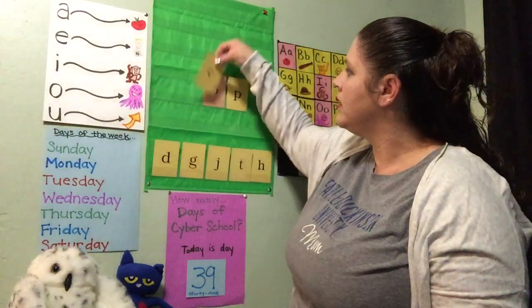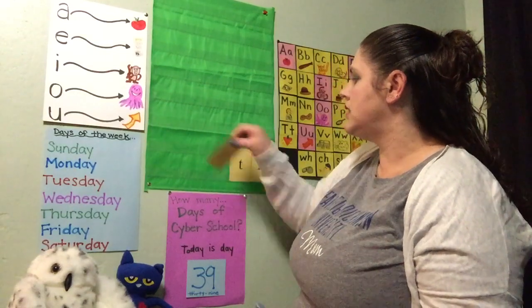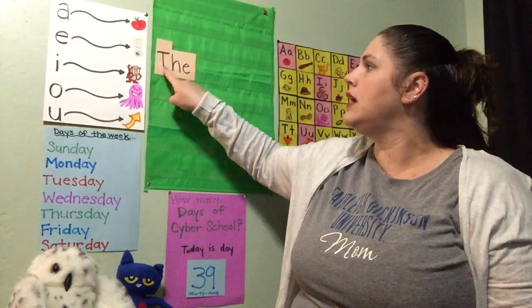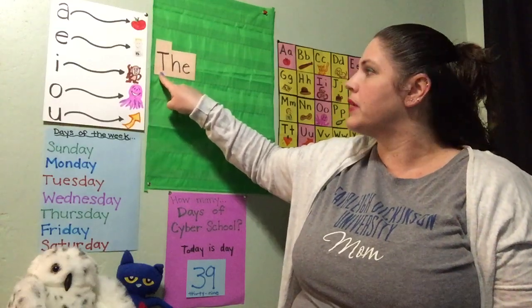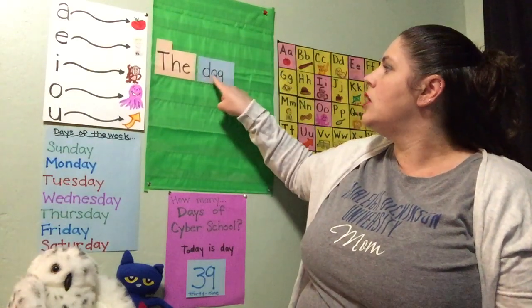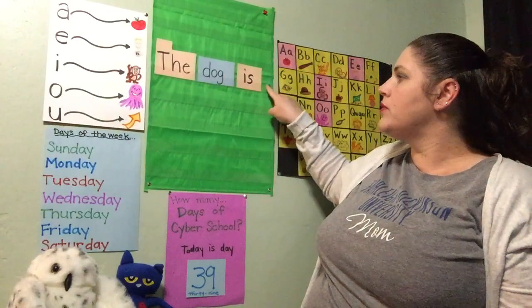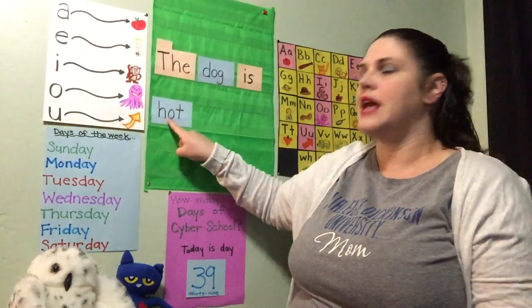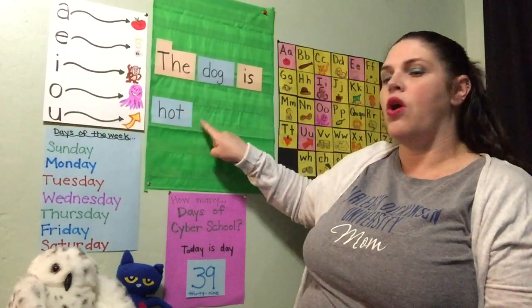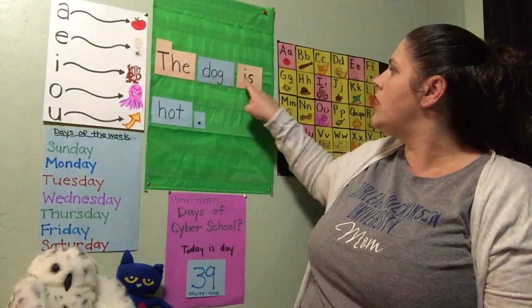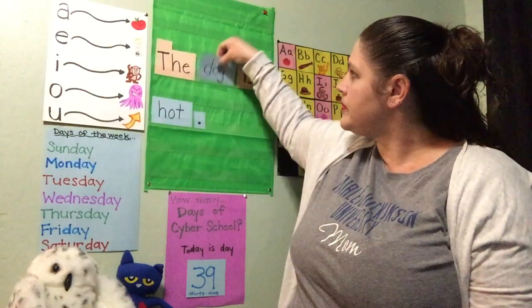Nice job with our tapping and blending this morning. All of our words have that "ah" sound in the middle — short O is our focus today. Now we're gonna write some sentences. Our first sentence is: "The dog is hot." The is one of our sight words. It begins with an uppercase T because it's the beginning of a sentence — all sentences start with uppercase. D, ah, g — dog. "Is" is another sight word. The dog is hot. We put a period there to tell us to stop reading. Let's read it one more time together: The dog is hot.